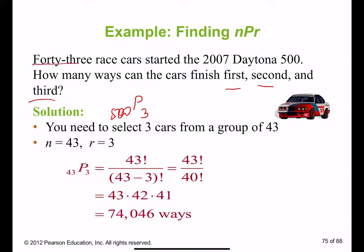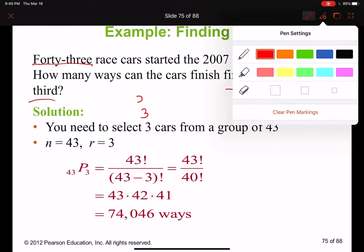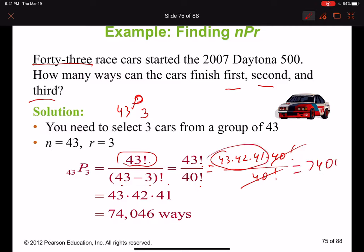So we need to find probability of 3 out of 43. It is going to be n factorial which is going to be 43 factorial over 43 minus 3 factorial, 43 over 40. So again, 43 times 42 times 41 times 40 factorial. We get 74,046 ways.